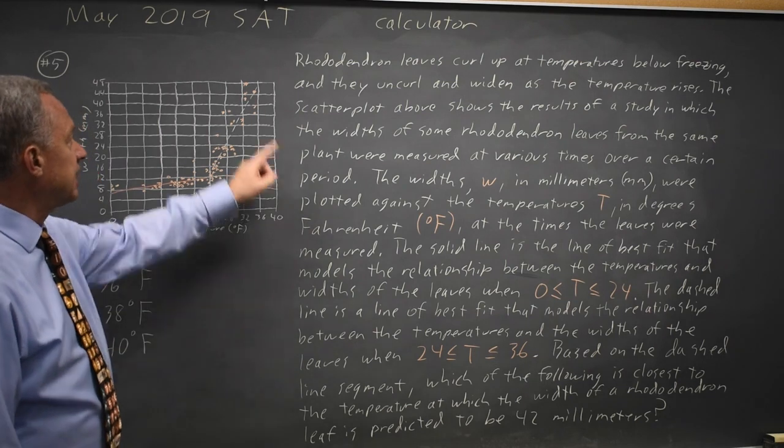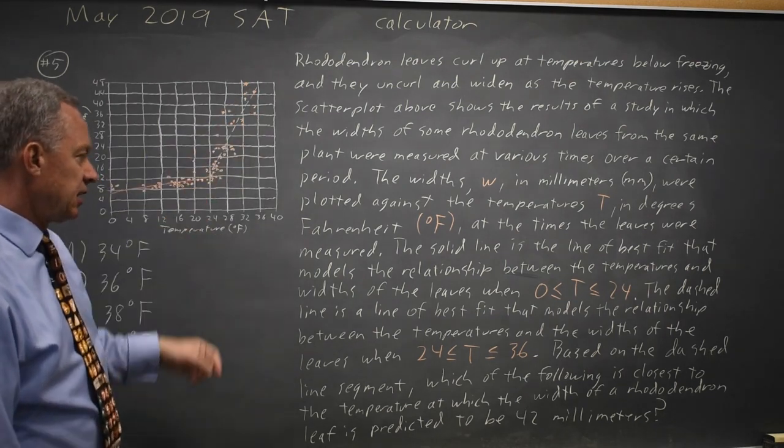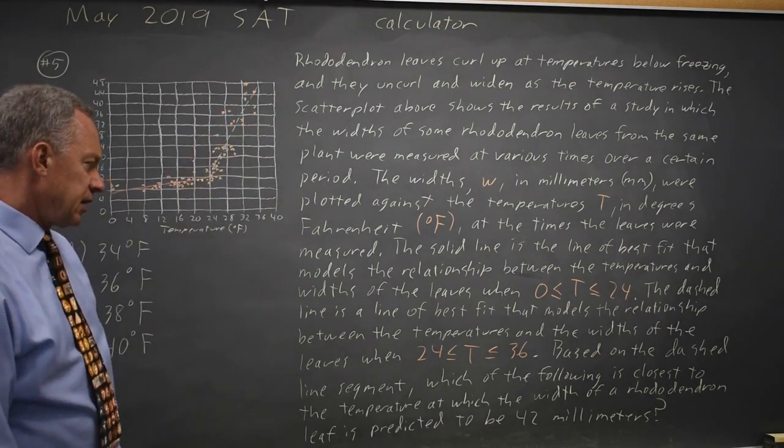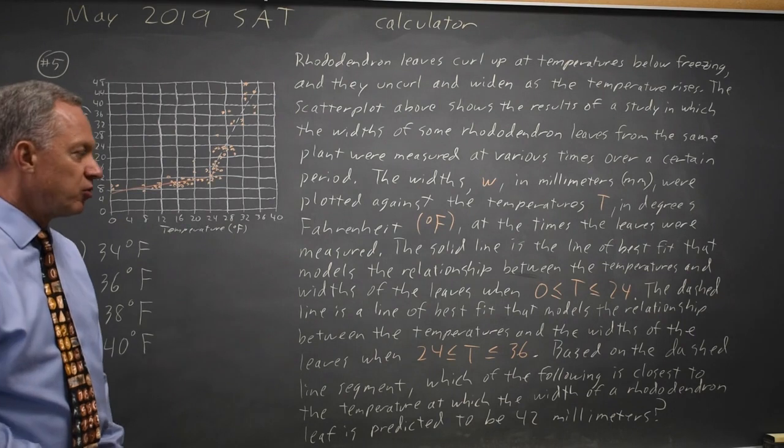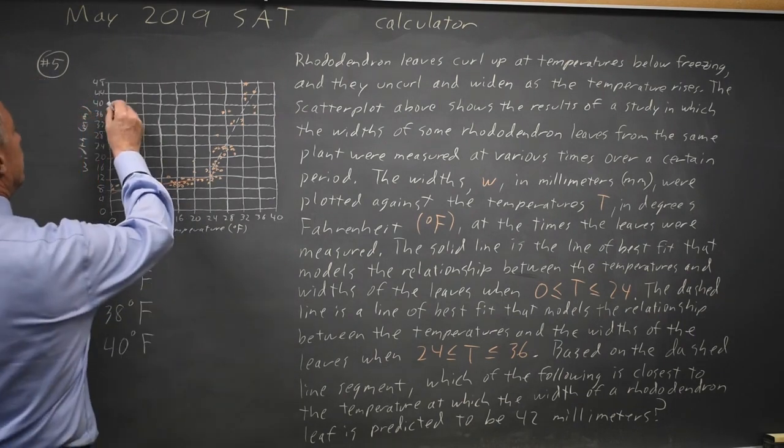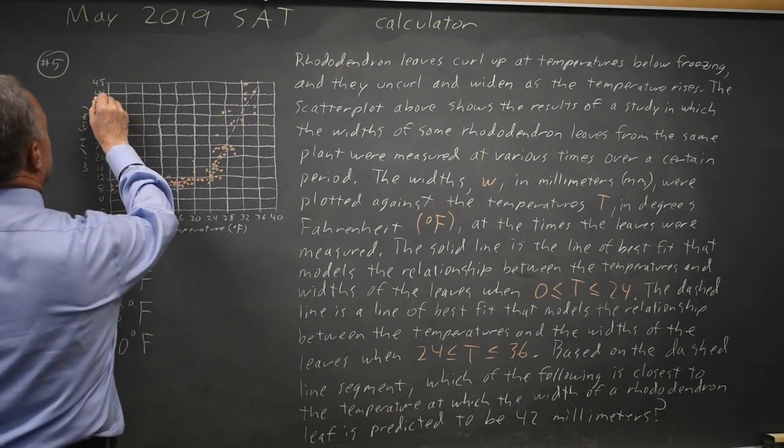Based on the dashed lines, that's from 24 to 36, they're asking what is the closest to the temperature at which the width is predicted to be 42 millimeters. 42 is halfway between 40 and 44.